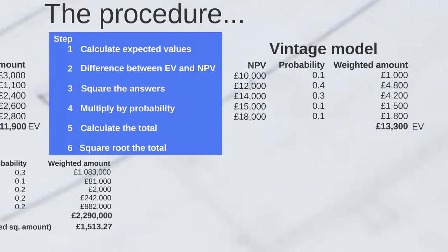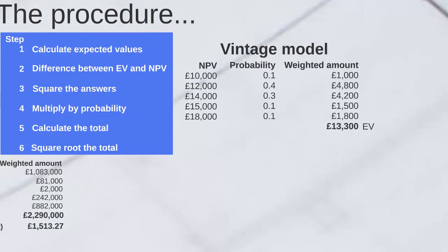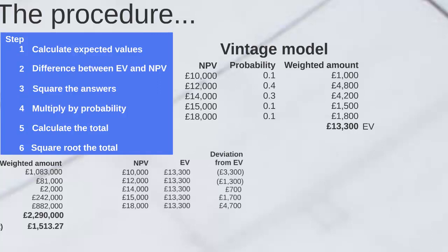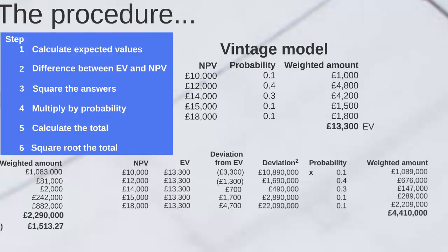We now move to the vintage model and repeat the process. We have our potential outcomes and our expected value. We find the deviation from the expected value by deducting it from each potential outcome. We square the deviation to remove negative numbers, multiply by the probability to give us the weighted amount, total those, and then square root the total. This gives us the standard deviation of the vintage model: £2,100.